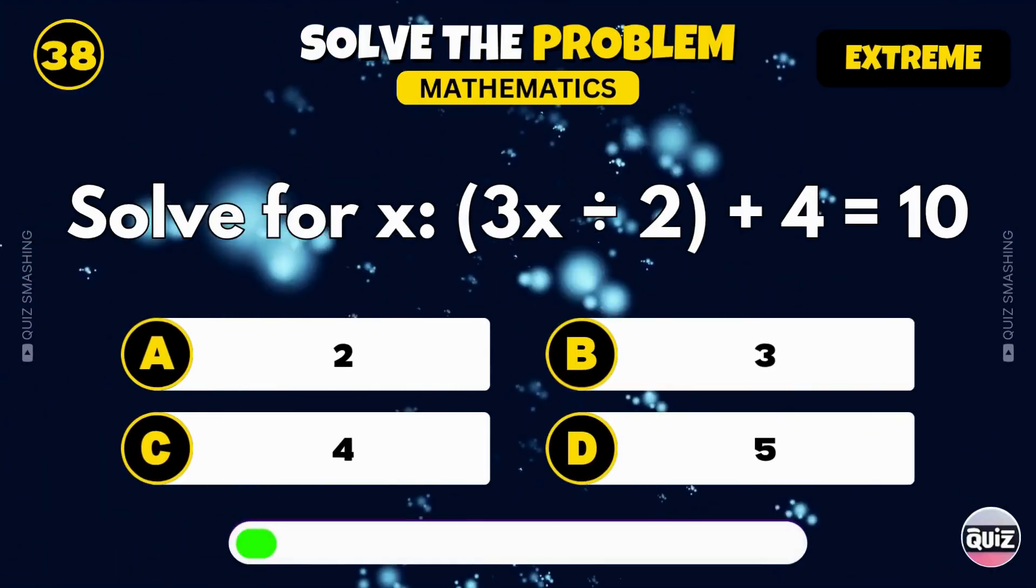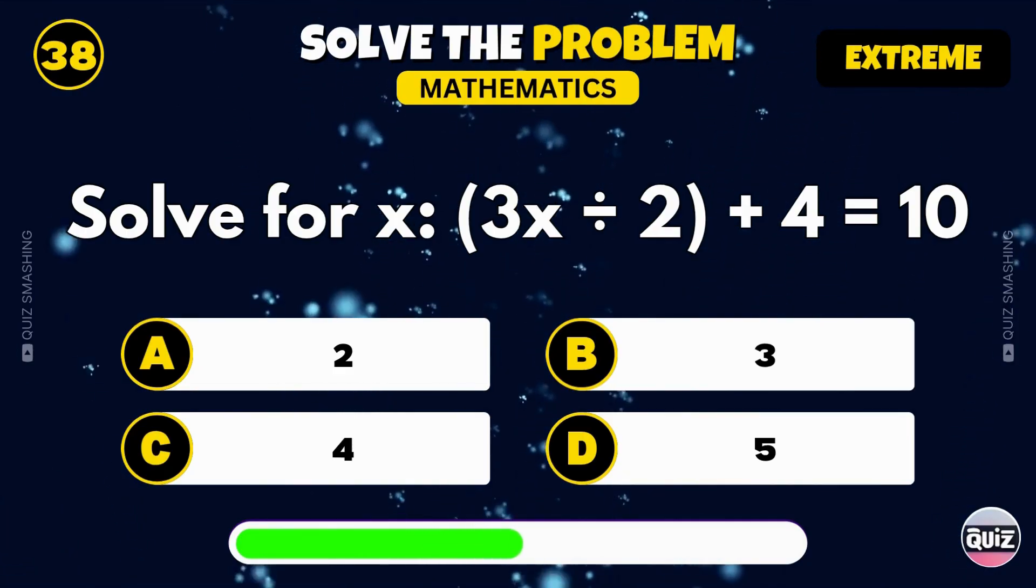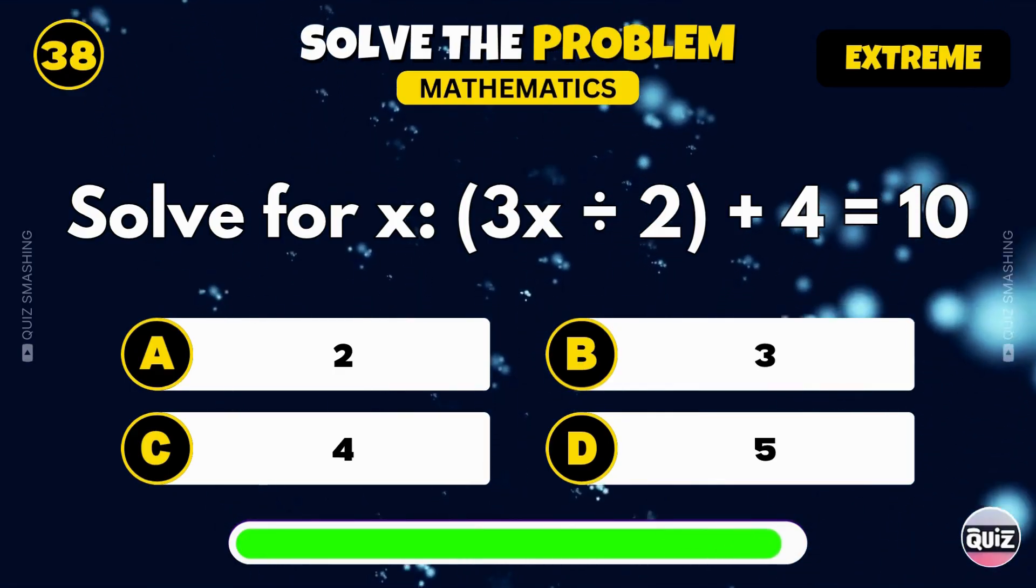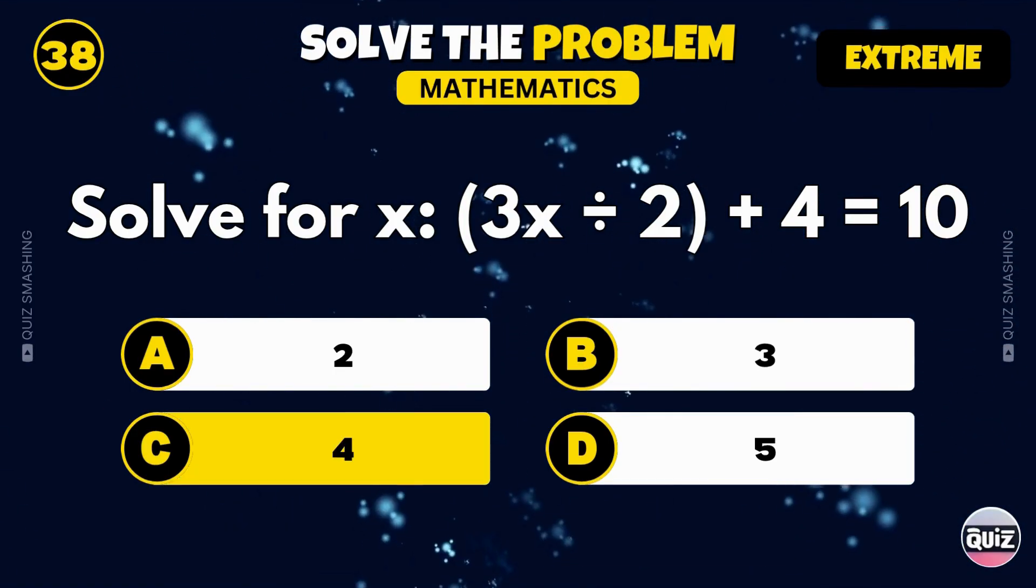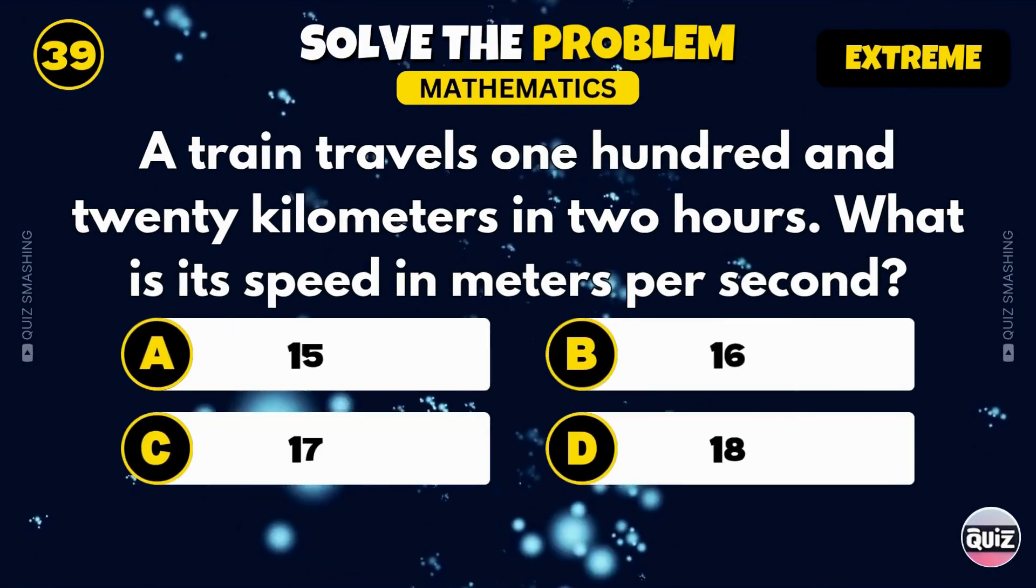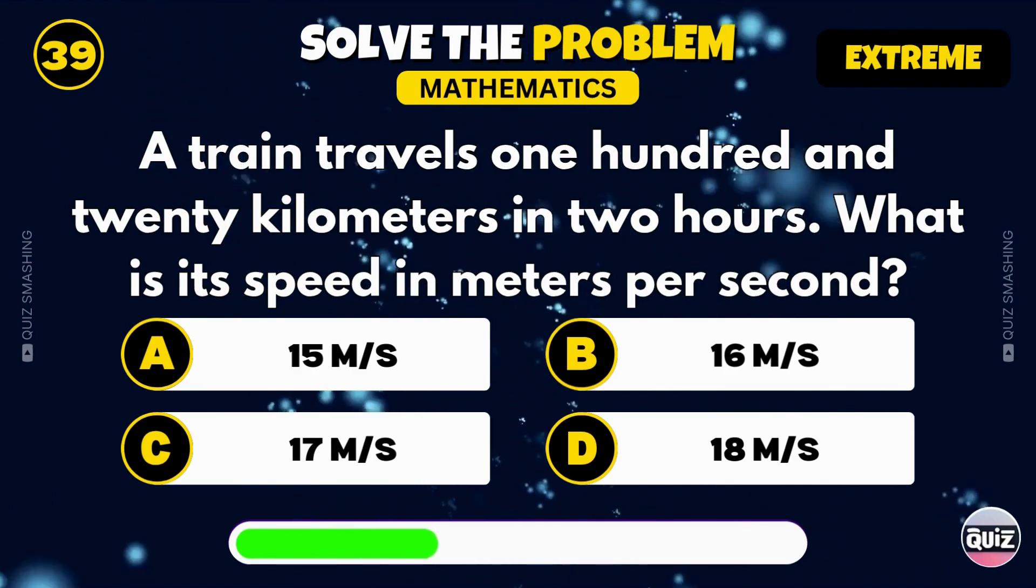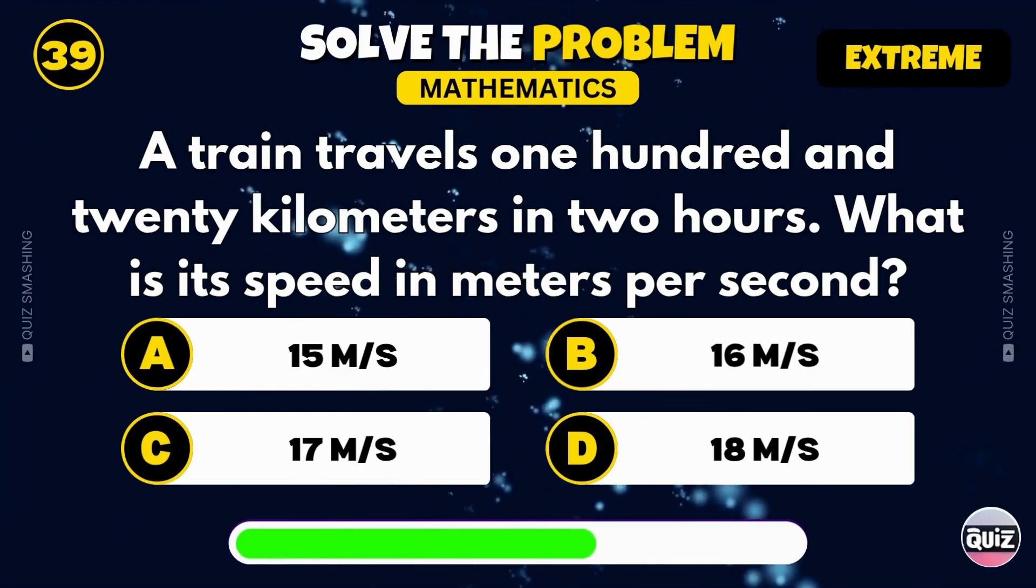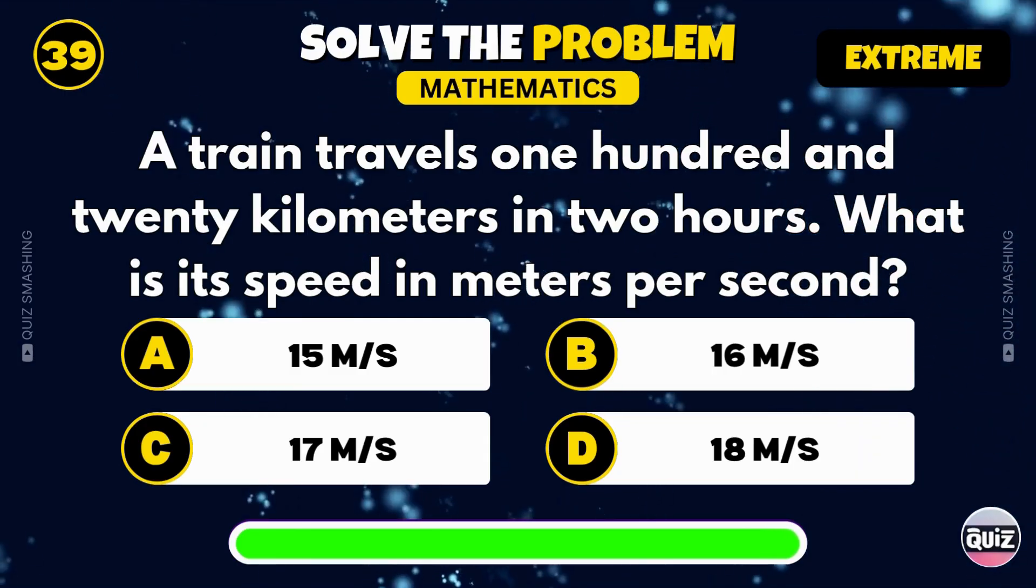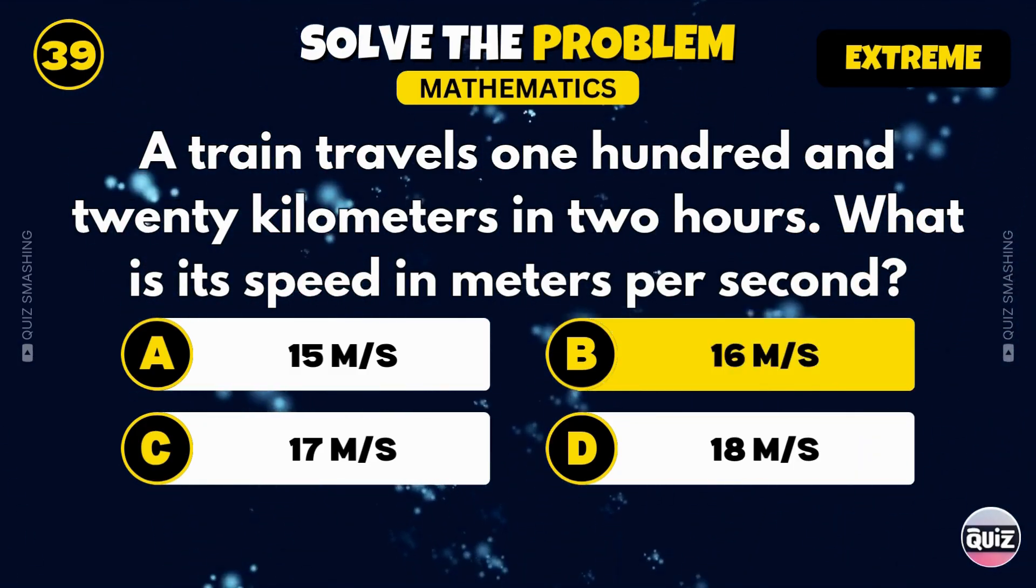Solve for x: 3x divided by 2 plus 4 equals 10. That's right, x equals 4. A train travels 120 kilometers in two hours. What is its speed in meters per second? Nice job, the answer is 16 meters per second.